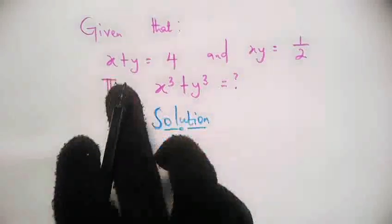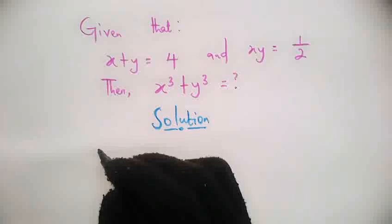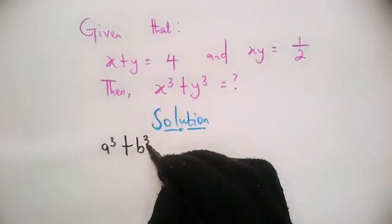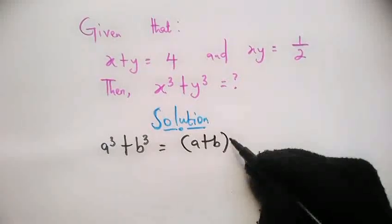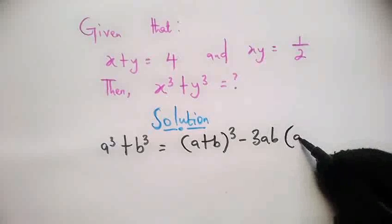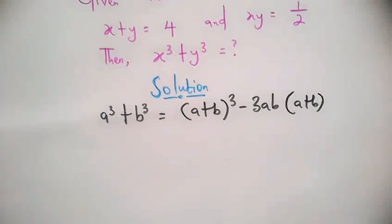So how do we do this? We are going to use the identity that a³ + b³ = (a + b)³ - 3ab(a + b). Now using this identity,